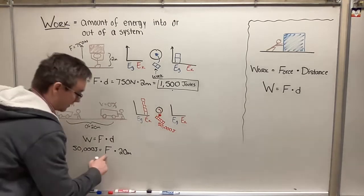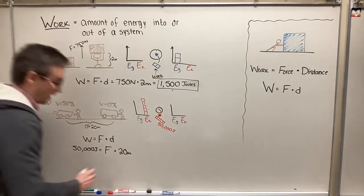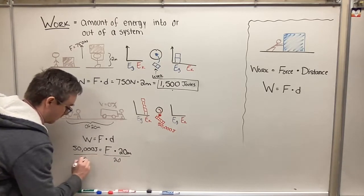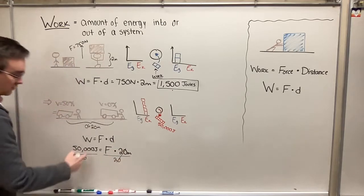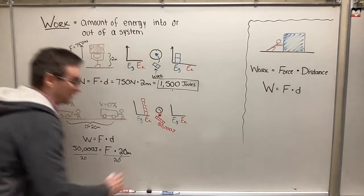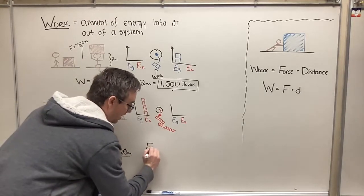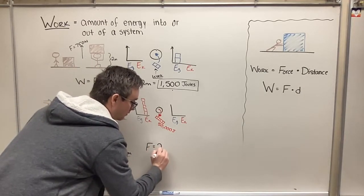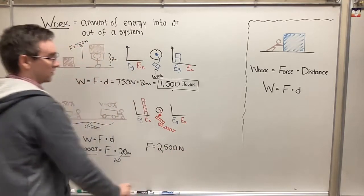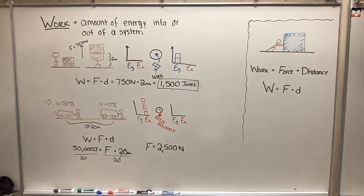Work is force times distance. But this time I know my work, 50,000 joules. I do not know my amount of force. That's what I'm trying to figure out times the 20 meters. If I wanted to do my algebra, that's 20F. I divide both sides by 20. That cancels, 50,000 divided by 20. That means that the amount of force that I applied was 2,500 newtons of force because I already knew how much work I did on it.